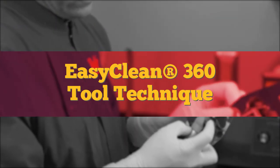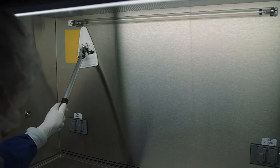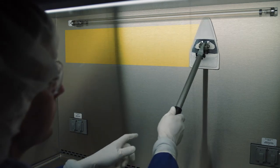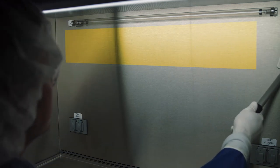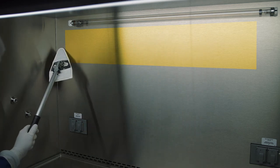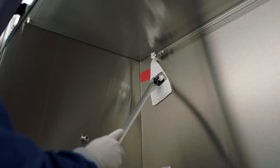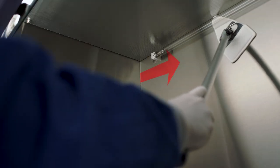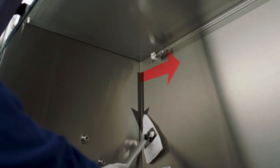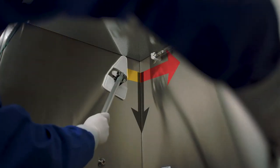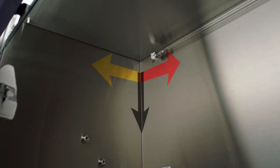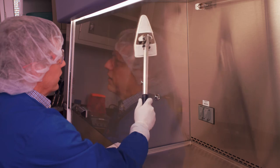EasyClean 360 tool technique: Wipe in straight parallel lines with overlapping strokes. Clean left to right, top to bottom, back to front, cleanest to dirtiest. Never wipe in a circular pattern.